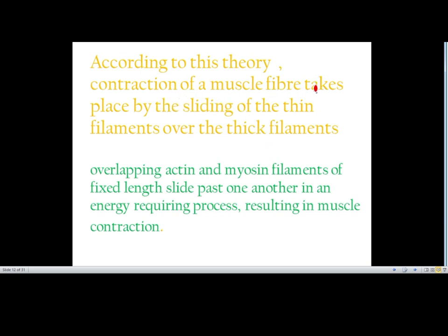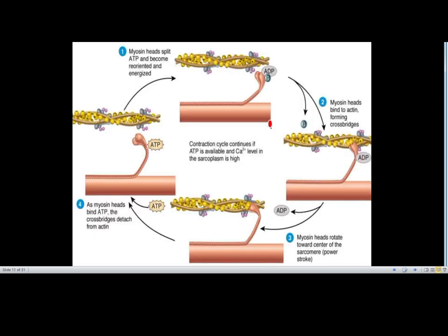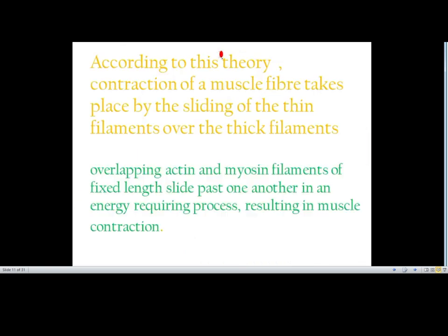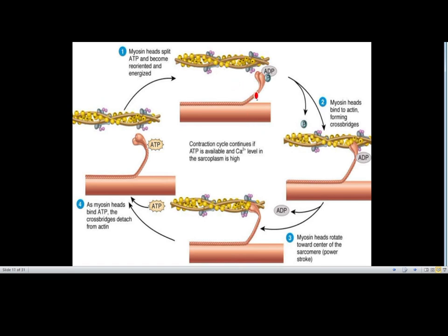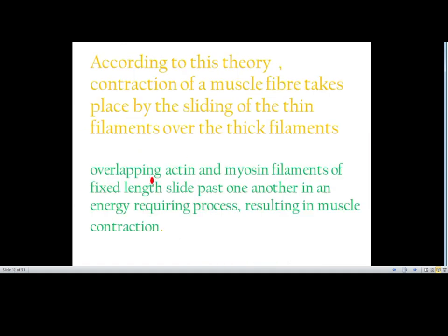The thick filament is myosin and the thin filament is actin. Overlapping actin and myosin filaments of fixed length slide past one another in an energy-requiring process resulting in muscle contraction. The energy comes from ATP hydrolysis. Muscle contraction is initiated by a signal sent by the central nervous system (CNS) via a motor neuron.